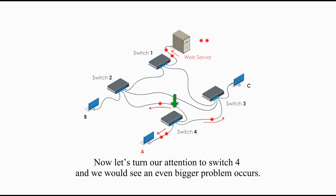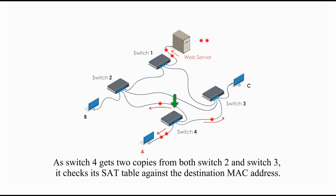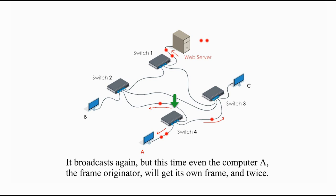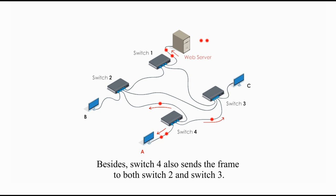Now, let's turn our attention to switch 4, and we would say an even bigger problem occurs. As switch 4 gets 2 copies from both switch 2 and switch 3, it checks its set table against the destination MAC address, it broadcasts again. But this time, even the computer A, the frame originator, will get its own frame, and twice. Besides, switch 4 also sends the frame to both switch 2 and switch 3.